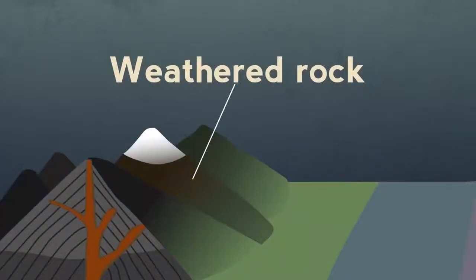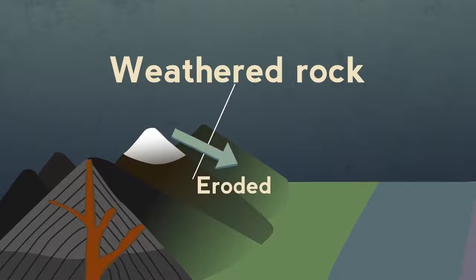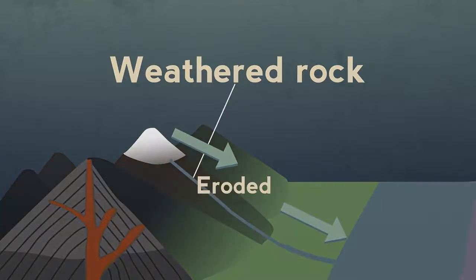Weathered rock forms the soil, but it is also eroded — that means transported either by wind, or more usually by water, to the sea.